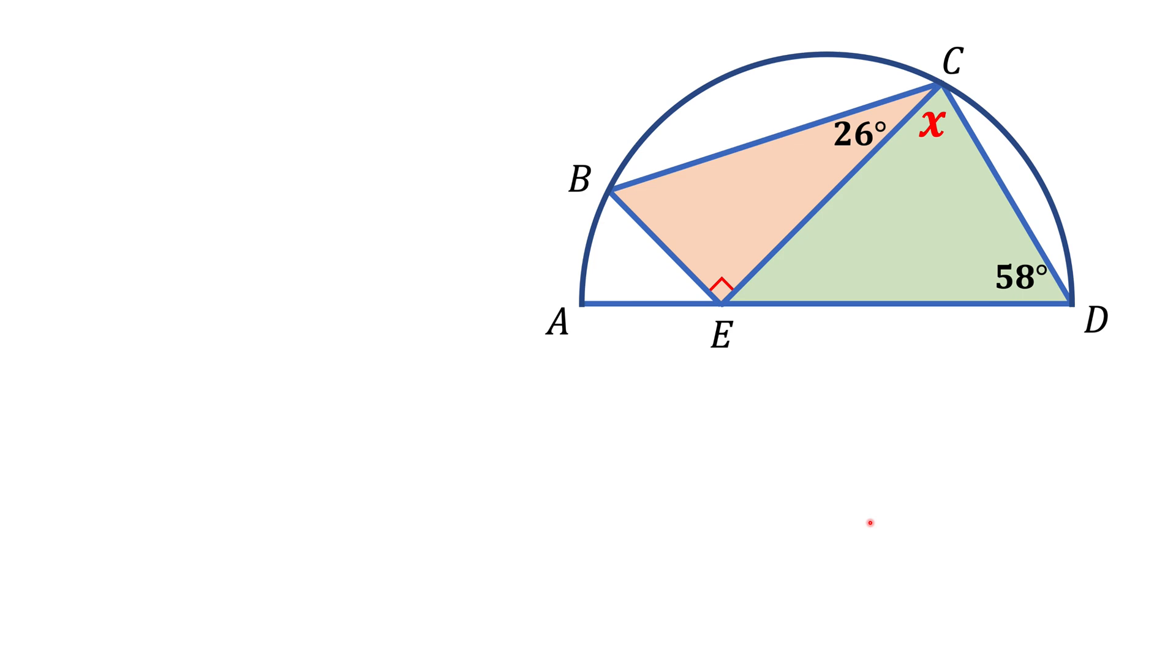Here we have a semicircle with AD as the diameter, and inside we have two triangles: the orange triangle BEC with a 26-degree angle, and the green triangle with a 58-degree angle. We're asked to find angle X.